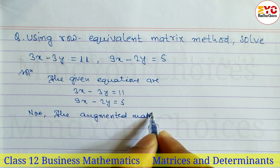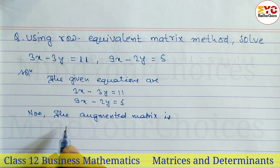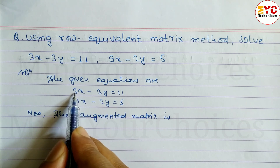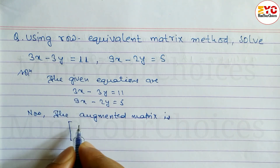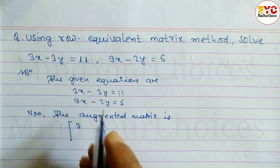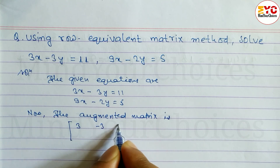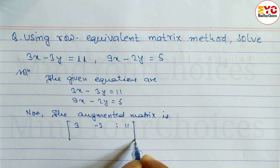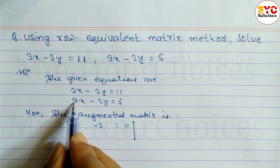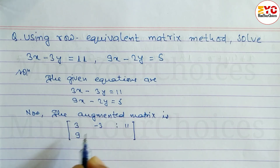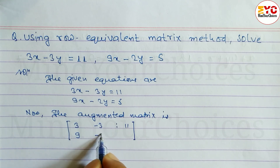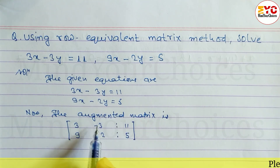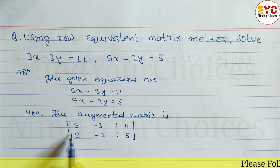The augmented matrix is formed by writing down the coefficient of x, the coefficient of y, and the constant number. The coefficient of x is 3, the coefficient of y is minus 3, and the constant is 11. From the second equation, the coefficient of x is 9, the coefficient of y is minus 2, and the constant is 5.